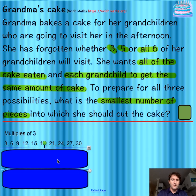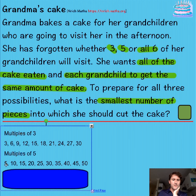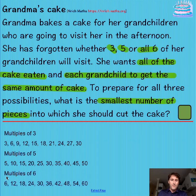Let's look at the multiples of five — here are the first ten: 5, 10, 15, 20... Even if she cut it into five pieces, she'd still be in trouble, because if only three kids turn up you can't divide five pieces evenly among three. And not only that, we need to think about the multiples of six as well, because if all six grandchildren turn up, all of these numbers would need to divide evenly among those six children.